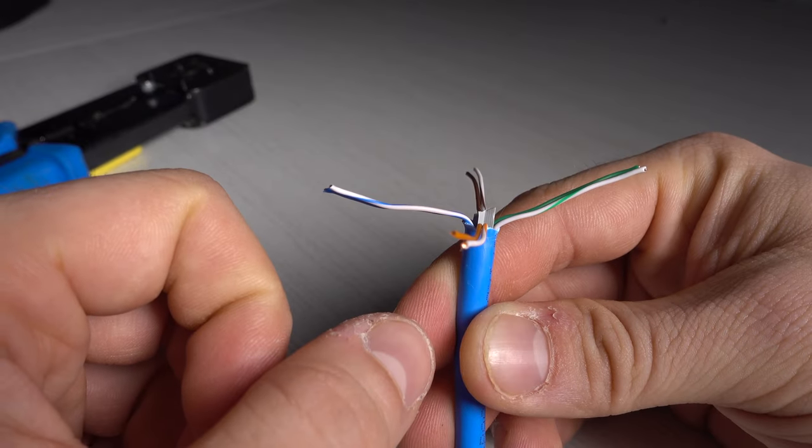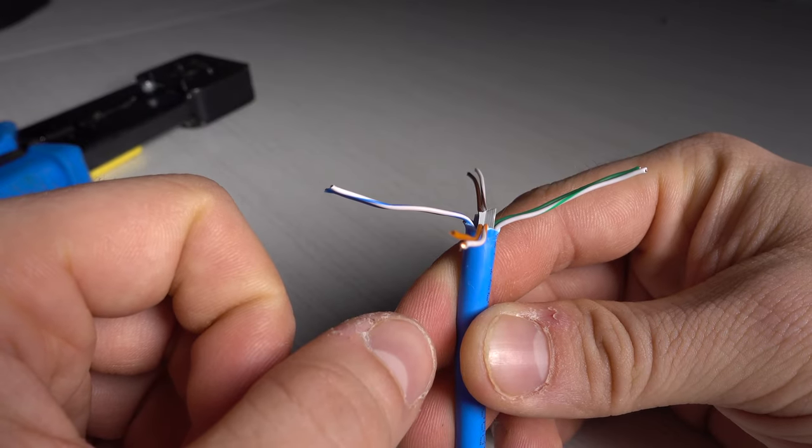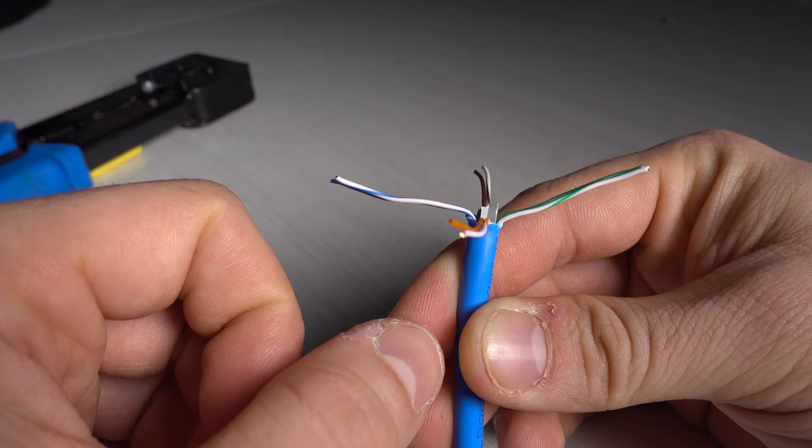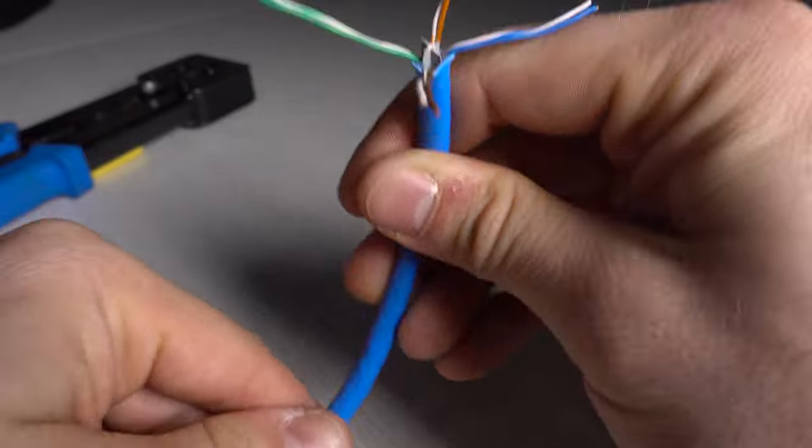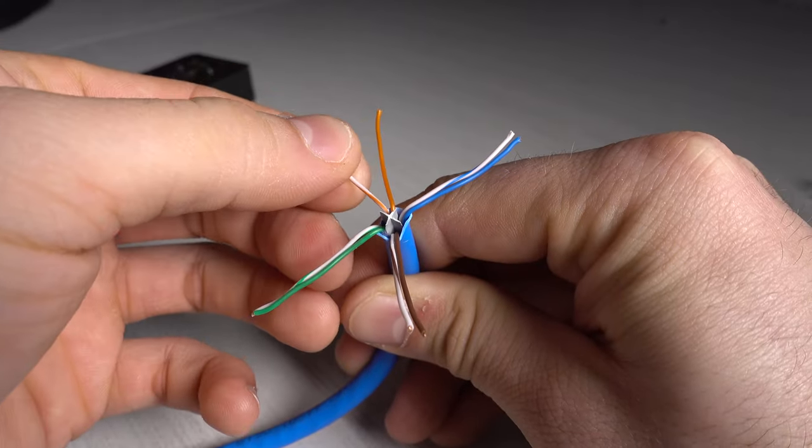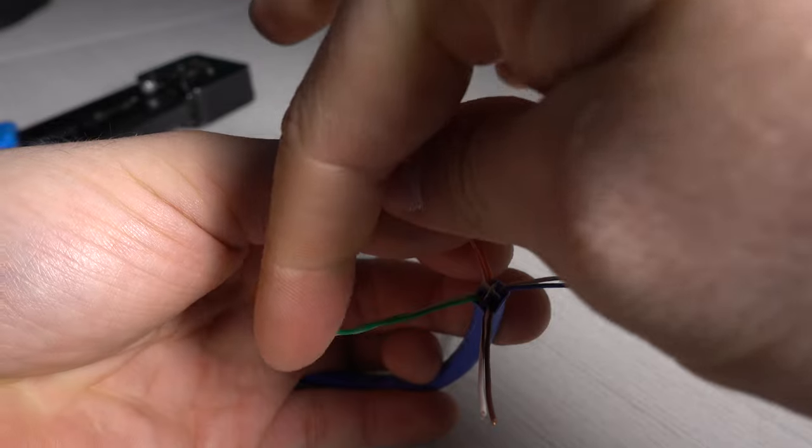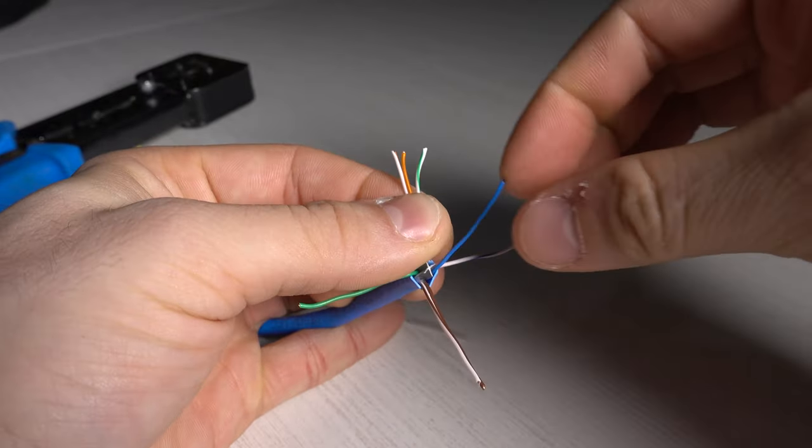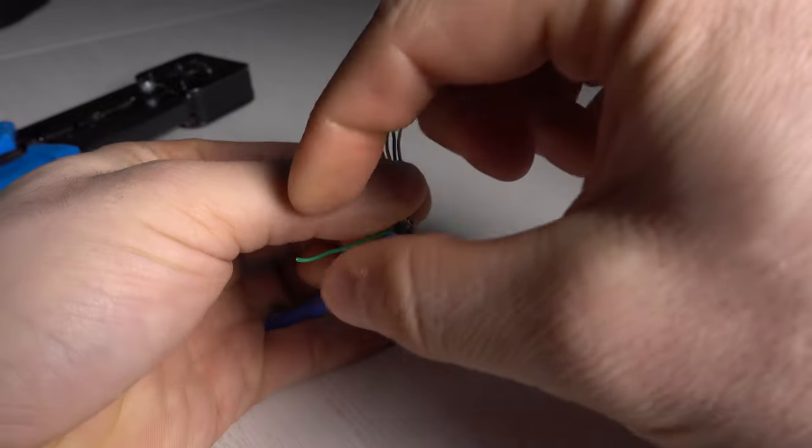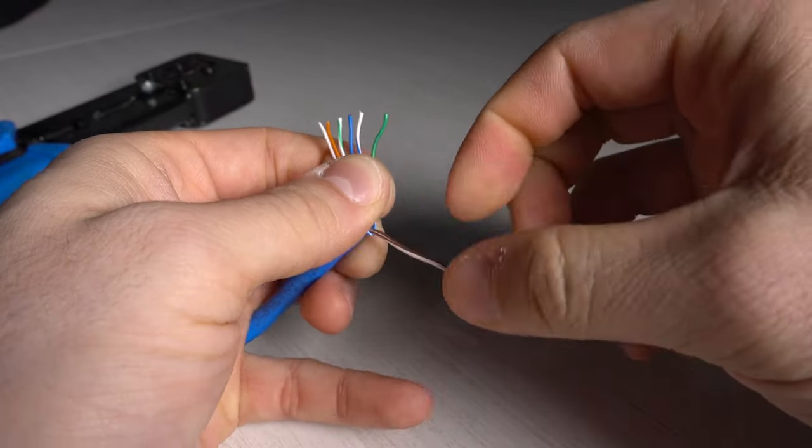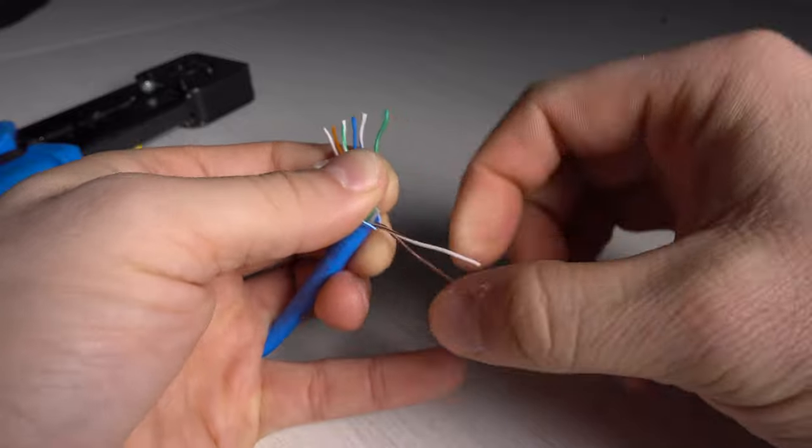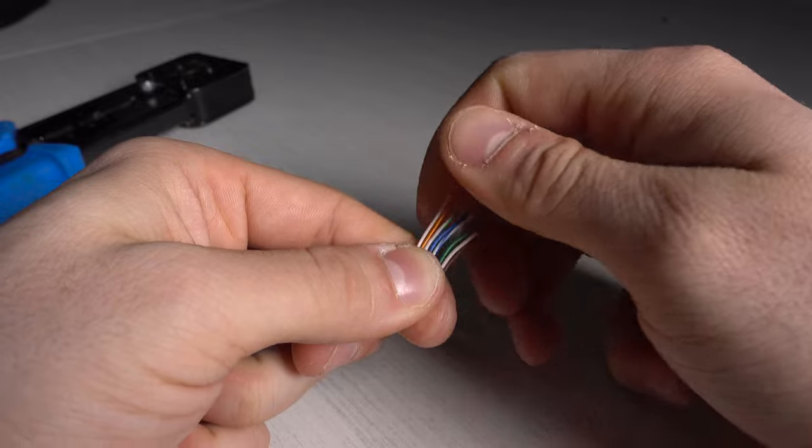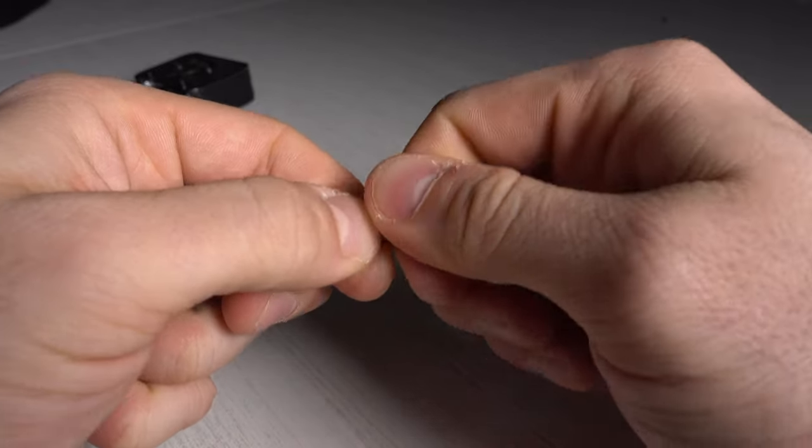Okay, the important thing is that at the end you need to have the same pattern both ways. Now I'm going to show you the pattern B, which is white-orange, orange, white-green, blue, white-blue, green, white-brown, and brown. And you can find this in the description below.